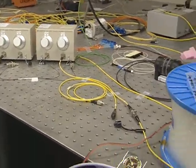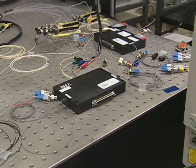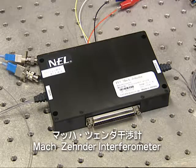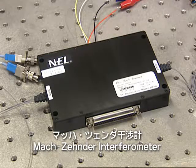The pulse stream reaches Bob through an optical fiber and enters the Mach-Zehnder interferometer.